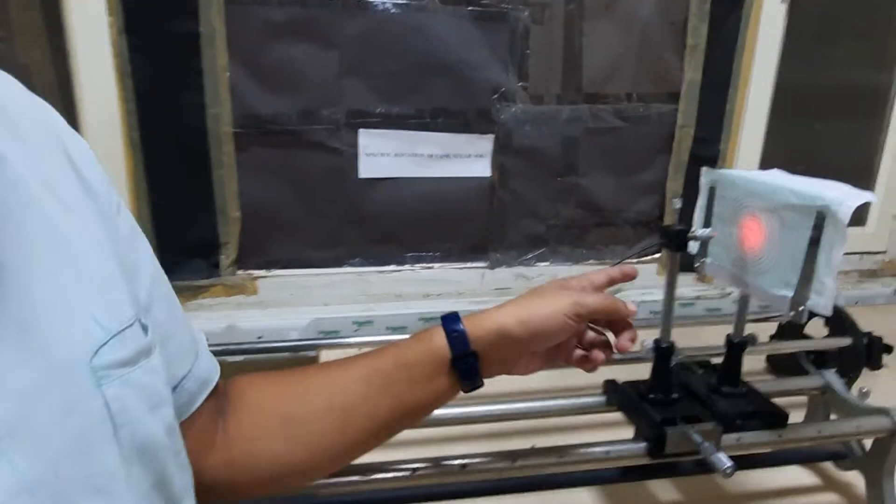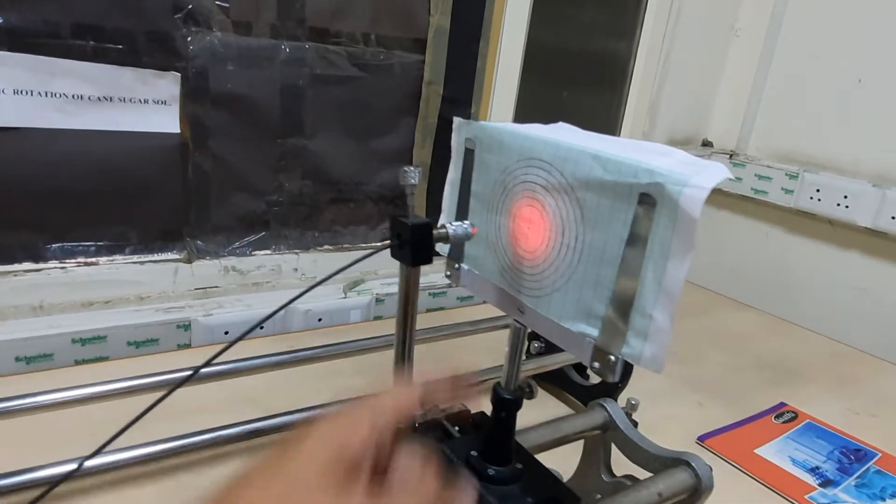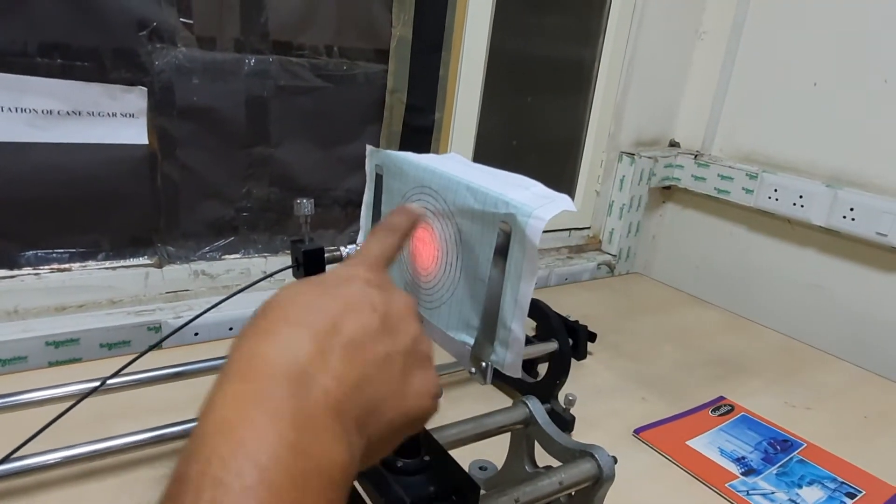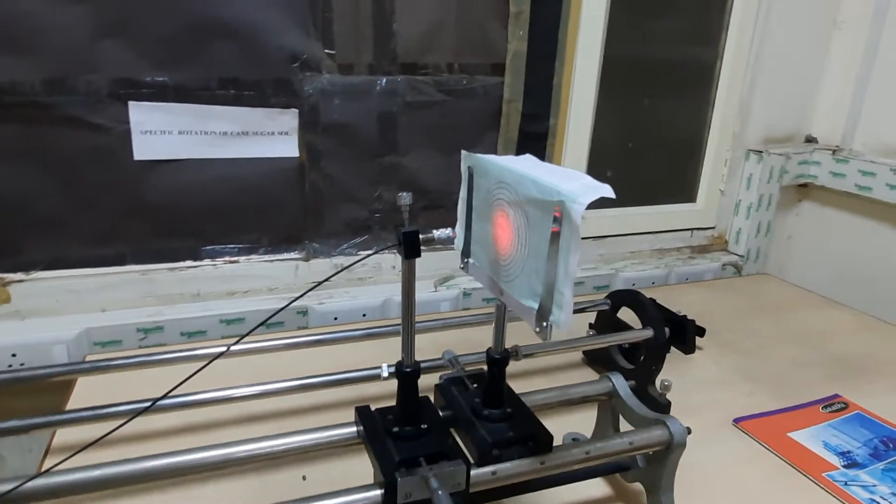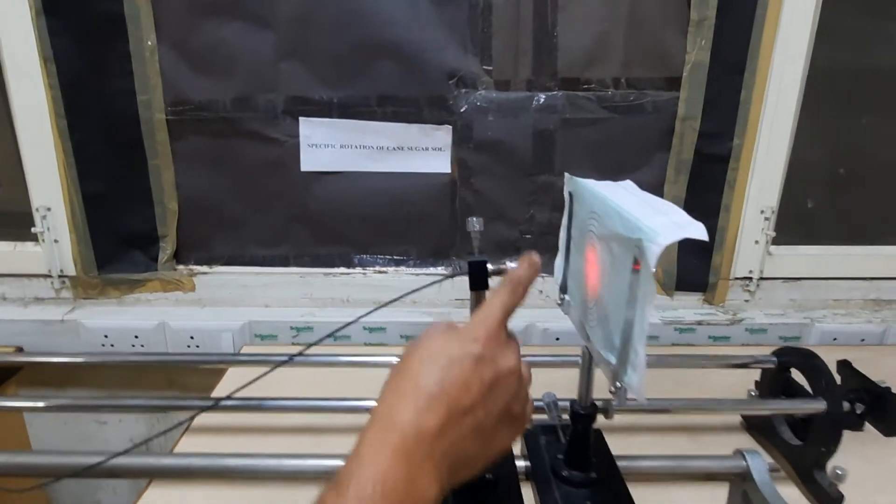Now what we have here is the light gets into the fiber optic cable through here and then it transmits and then comes out here. What we have done here is that we have already placed some concentric circles.